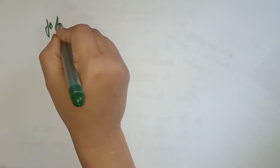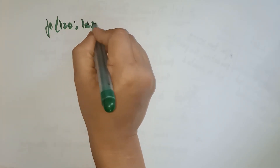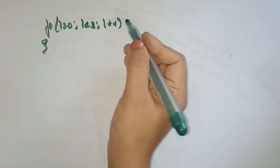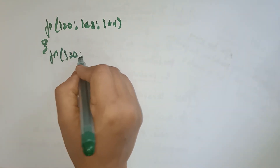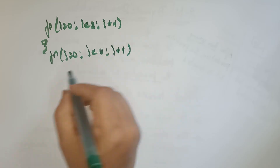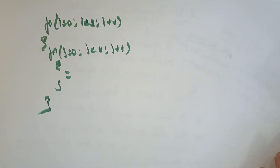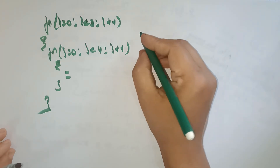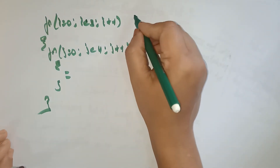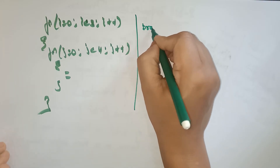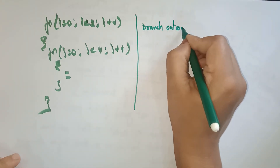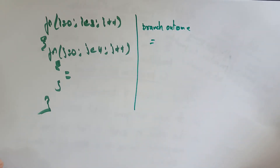Let's take the same example from the previous video. For i equal to 0, i less than 3, i++; and for j equal to 0, j less than 4, j++. This is the nested for loop. Let me write the branch outcome — the expected output from this loop.